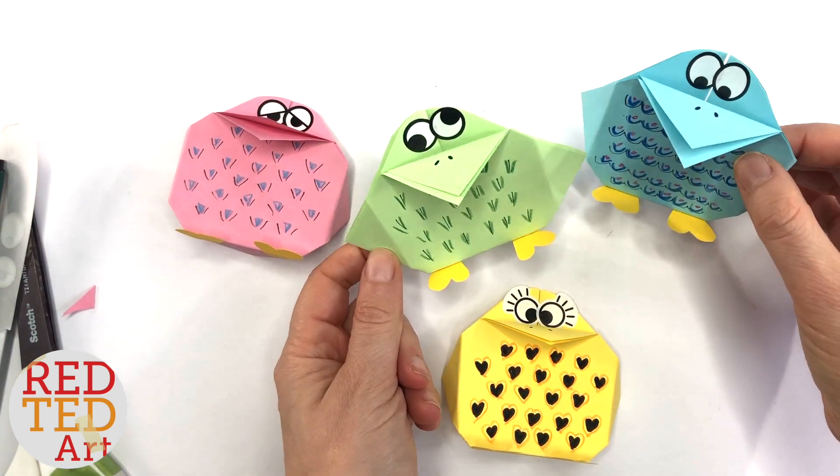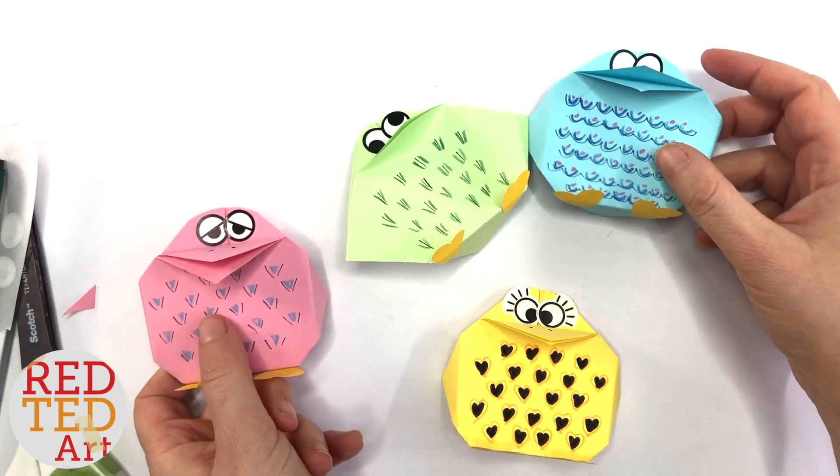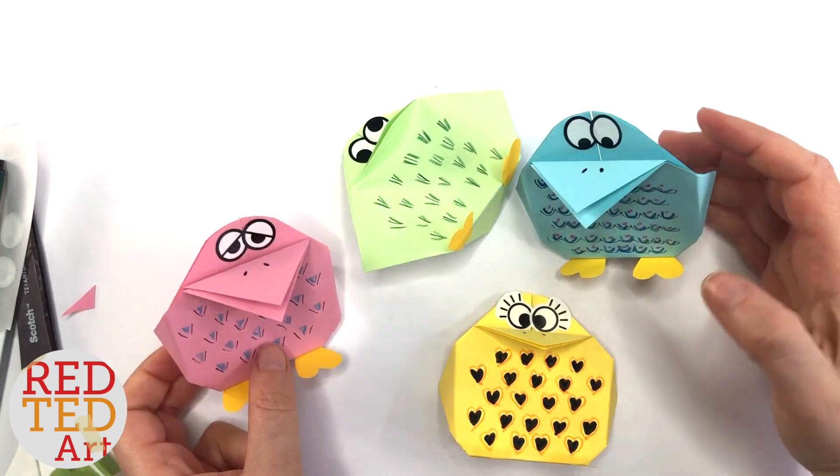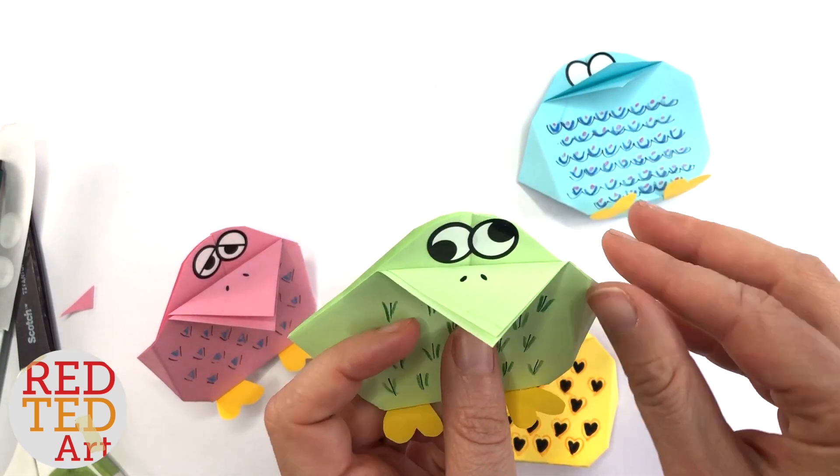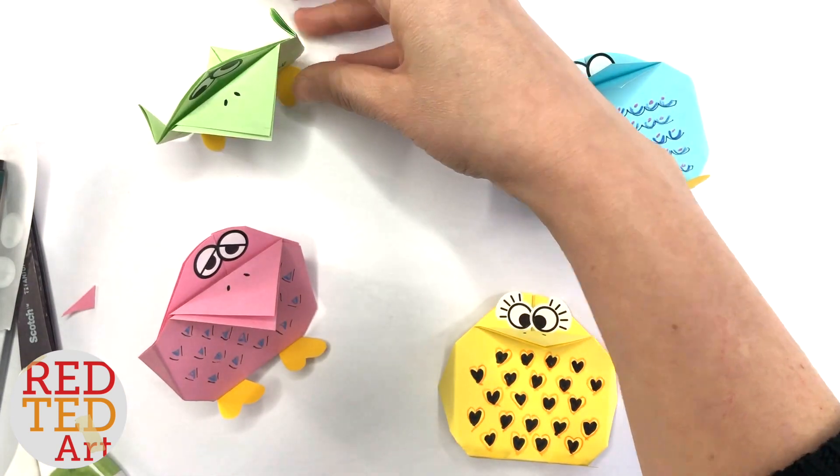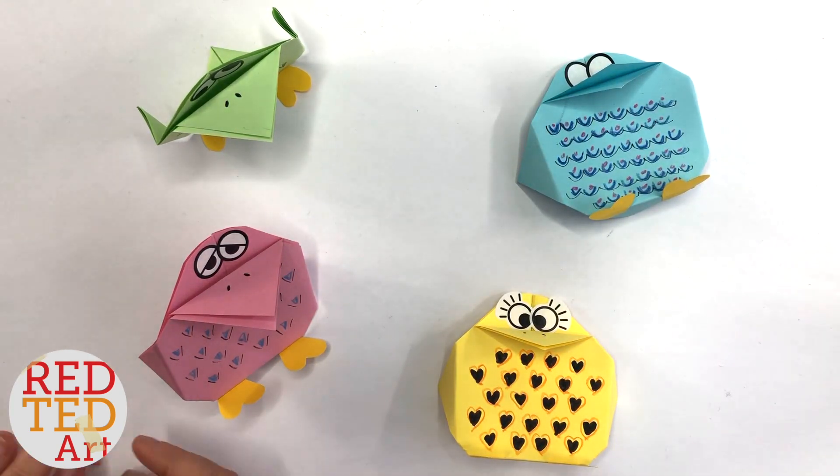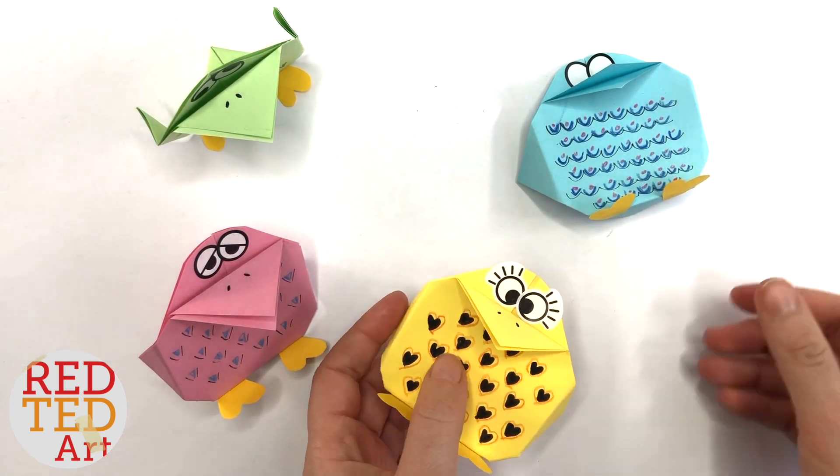You know, make them in white, maybe add rainbow tummies. You know, whatever you've got, whatever colors you've got to work with. And I think these make super fun little spring decorations that stand up and decorate your room.